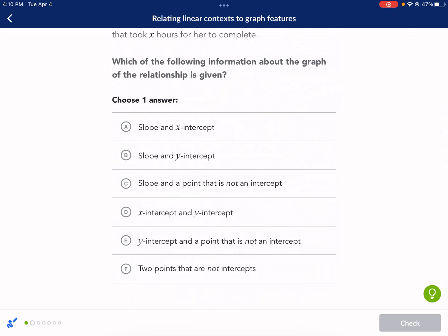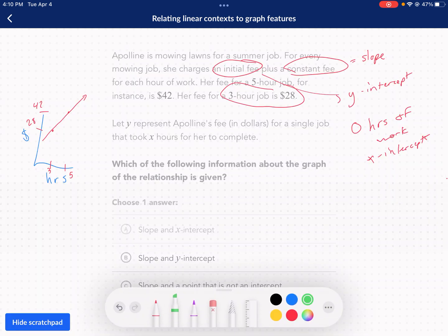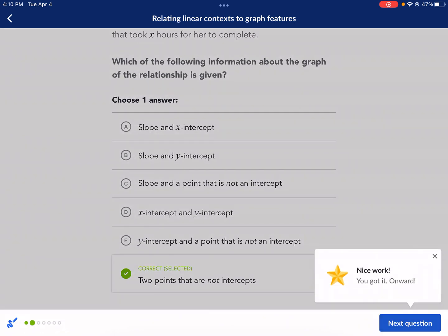So which option does that mean? That means it's going to be F. If we're given two points that are not intercepts, and again, our graph here, we saw that we had a point here and a point here. Those are two points that are not intercepts, and there we go. That's it. Moving on.